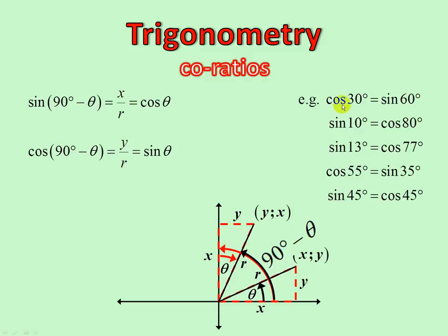So cos(90 minus theta) equals sin theta and vice versa: cos 30 equals sin 60, sin 10 equals cos 80, sin 13 equals cos 77, cos 55 equals sin 35, sin 45 equals cos 45. Try it on your calculator! That's where the 'co' comes from — in grade 8 you learnt about complementary angles adding up to 90, and that's the whole idea. Cos of 30's complementary ratio, without the 'co', is 60.